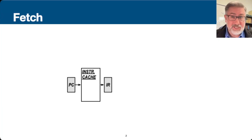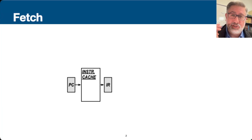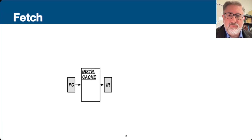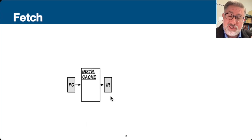We start with fetch. That means we need a place for instructions to be, a place to tell the machine which instruction we want, and a place to put the instruction that we get. For RISC-V — really for any machine — we've got a program counter, an instruction cache, and an instruction register to hold the instruction.